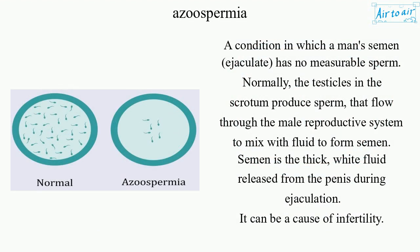Azoospermia is a condition in which a man's semen, or ejaculate, has no measurable sperm. Normally, the testicles in the scrotum produce sperm that flow through the male reproductive system to mix with fluid to form semen. Semen is the thick, white fluid released from the penis during ejaculation. It can be a cause of infertility.